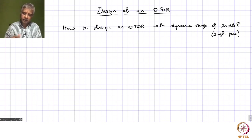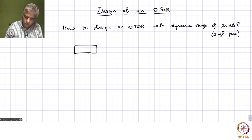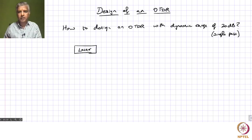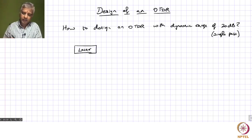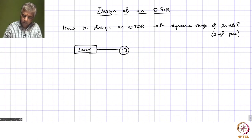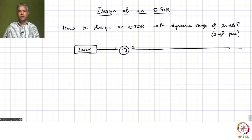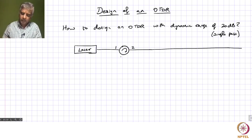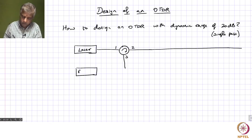Now, to design an OTDR we need a laser. If it is sitting inside an instrument it may be a compact semiconductor laser. We are looking at a fiber-coupled configuration, so we typically use a circulator, which directs light from port 1 to port 2. Port 2 is where we have our sensing fiber going to the distant location, and any back-reflected light is collected at port 3 and directed to the receiver.